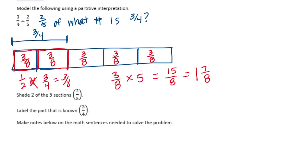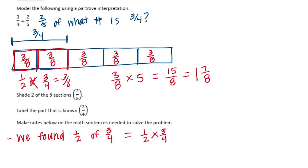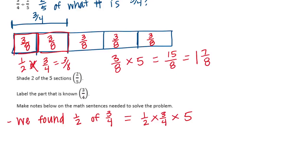This is going to help us find answers a lot faster. What we did first was find half of three-fourths, or one-half times three-fourths. Then after that, we multiplied by five. Everything we did involved multiplication — we didn't actually need to divide anything.